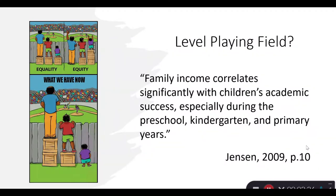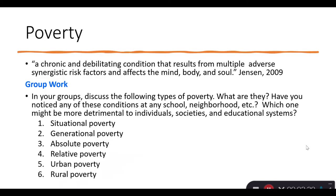Poverty has been defined in a variety of ways. Jensen basically points out that poverty is a chronic and debilitating condition that results from multiple adverse synergistic risk factors and affects the mind, body, and soul. The idea behind this quotation is clear: poverty affects humans at the deepest level of cognition, emotion, and social behavior.